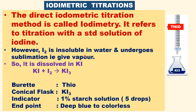However, iodine is insoluble in water and undergoes sublimation — that is, it gives vapor. So it is dissolved in a KI aqueous solution. First dissolve KI in water, then add I2 to it. It will form a complex — KI reacts with iodine to form KI3, and this is an equilibrium process where KI3 also dissociates to give KI plus I2.